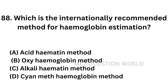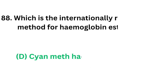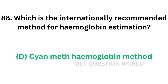Question number 88: Which is the internationally recommended method for hemoglobin estimation? Option A: acid hematin method. Option B: oxyhemoglobin method. Option C: alkali hematin method. Option D: cyanmethemoglobin method. The cyanmethemoglobin method is the most accurate and convenient. All types of hemoglobin except sulfhemoglobin can be converted into cyanmethemoglobin. So the correct answer is Option D, cyanmethemoglobin method — it is the internationally recommended method for hemoglobin estimation.